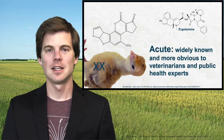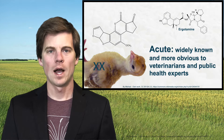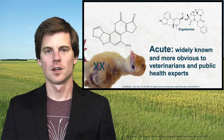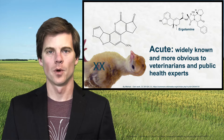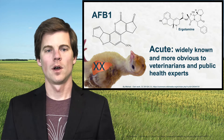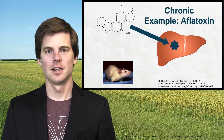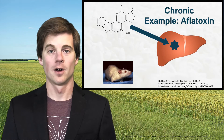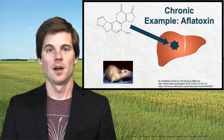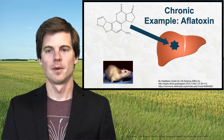We would see that as acutely toxic, and that becomes the more obvious, widely known toxicity because it is so apparent and easy to see and record. Whereas with chronic toxicity, even though it might affect the same target — such as the liver, like it did in our turkey poults — it affects it over time.